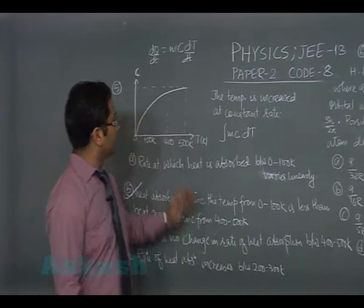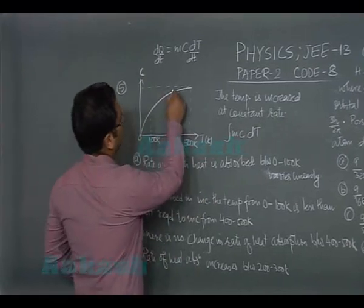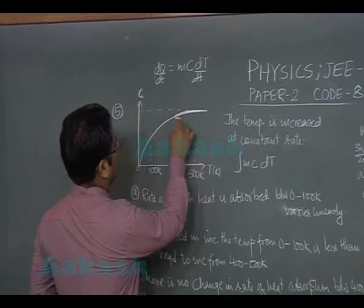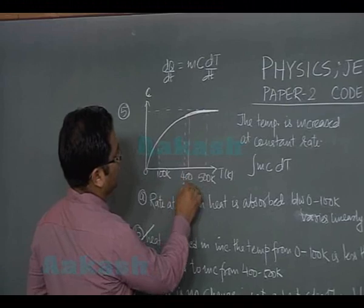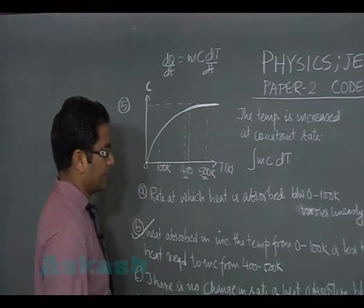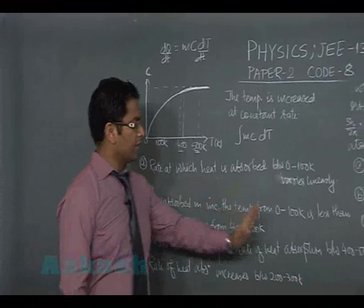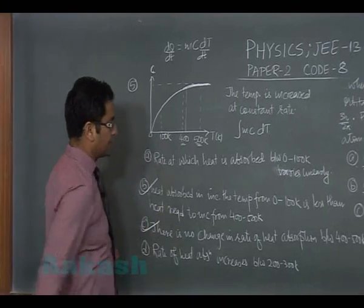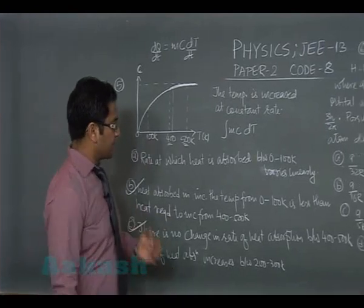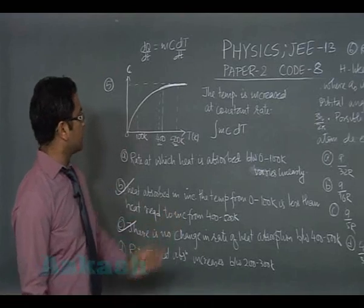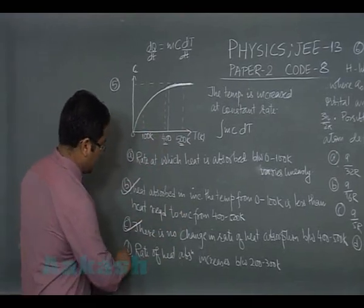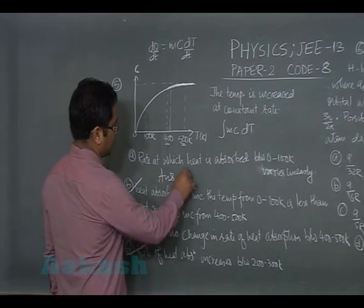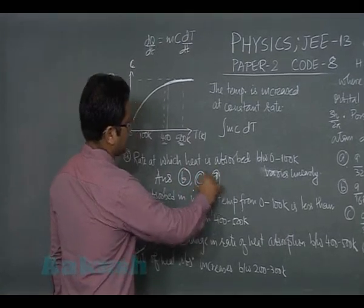From 400 to 500, the area is greater than 0 to 100, so B is correct. There is no change in rate of heat absorption between 400 to 500 kelvin. In fact, in the original figure from 400 to 500, it's almost constant there. So between 400 to 500, c is constant, so therefore change in rate of heat absorption is obviously 0. So option C would be correct. And rate of heat absorption increases between 200 to 300 kelvin - that's quite obvious from the figure. So D would also be correct. So this question demands answer as B, C, and D.